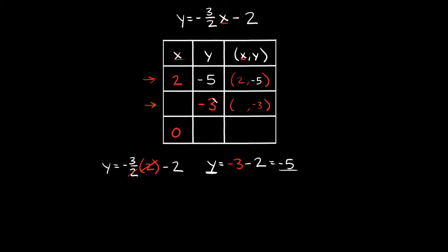Since we're given the y-coordinate, that means we're going to plug in negative 3 for y right here, and then we're going to have to figure out what x is — or solve for x. So let's plug in negative 3 into this equation for y and write it down. The y is equal to negative 3, and we're going to set that equal to negative 3 halves times x — we don't know what x is — and then minus 2.